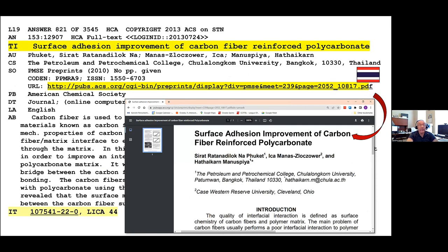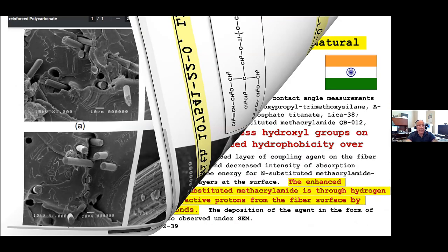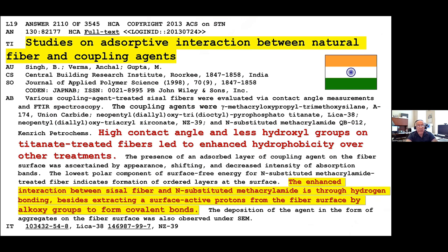Other abstracts covered surface adhesion improvement of carbon fiber-reinforced polycarbonate, showing SM7SN on the fiber without coupling agent versus with the aliphatic amino titanate, demonstrating the adhesion of the polymer to the carbon interface. Work done in India showed that the high contact angle and fewer hydroxyl groups on the titanate-treated fibers led to enhanced hydrophobicity over other treatments. One of the problems with hydrolysis using silanes is that you leave water on the interface, which presents long-term aging issues and problems with water boil aging tests.